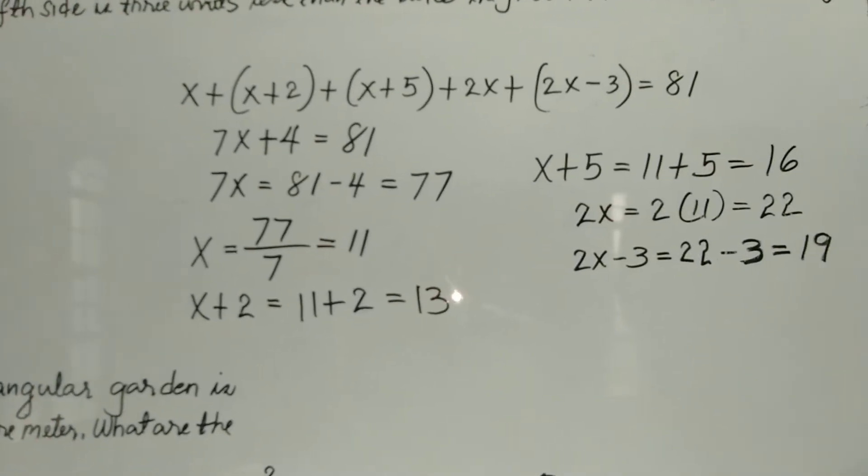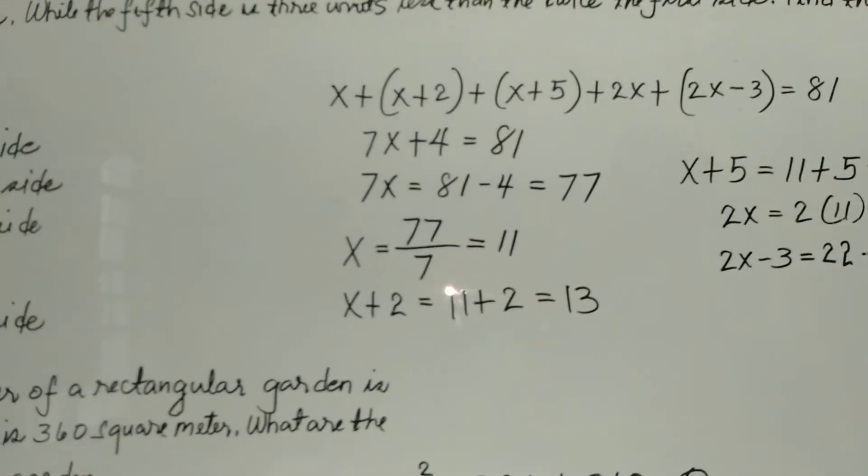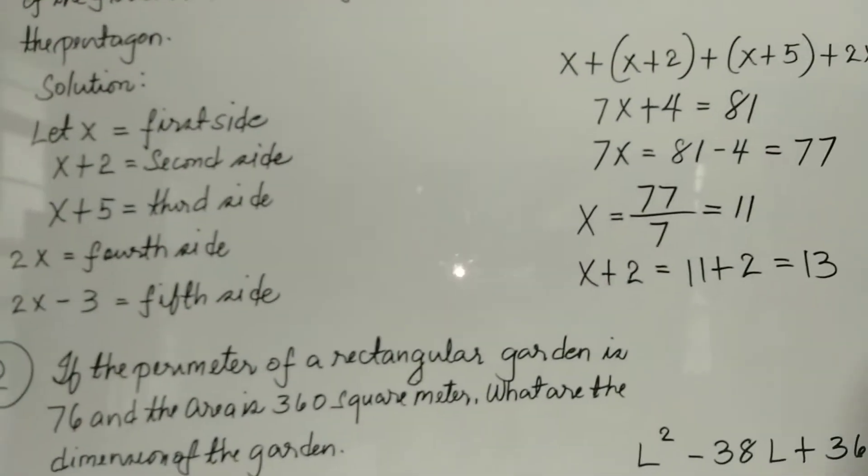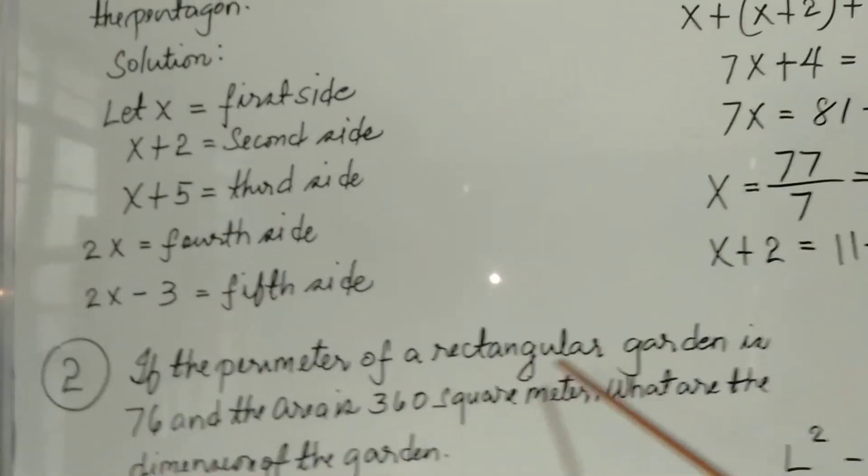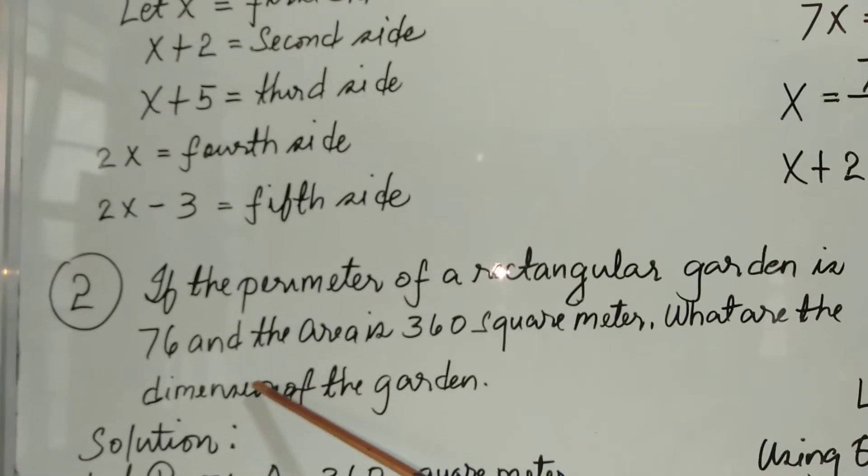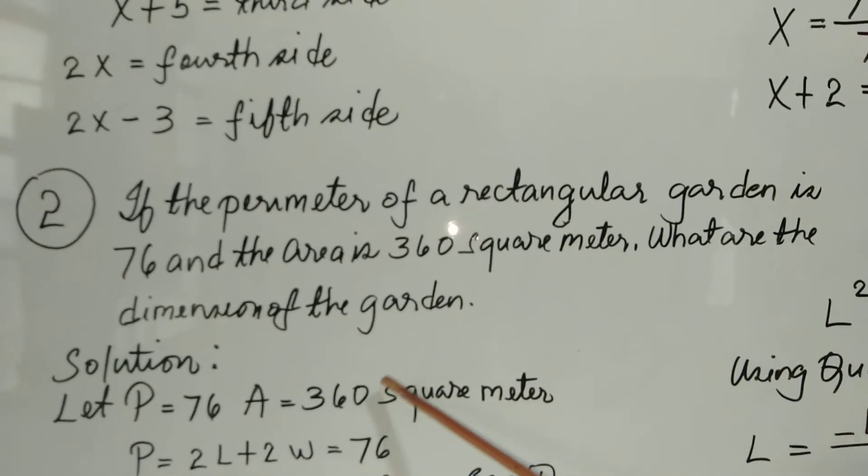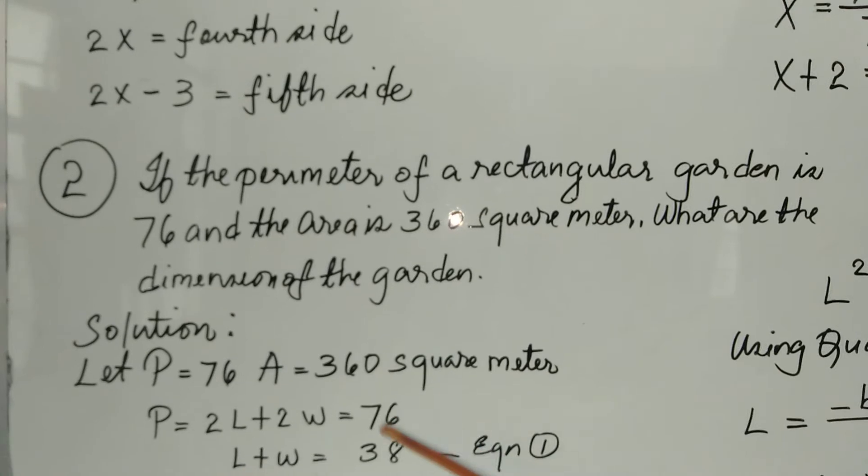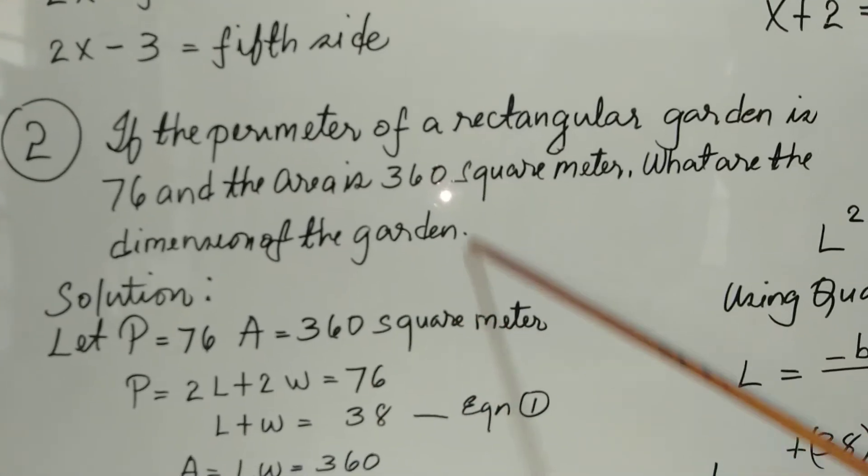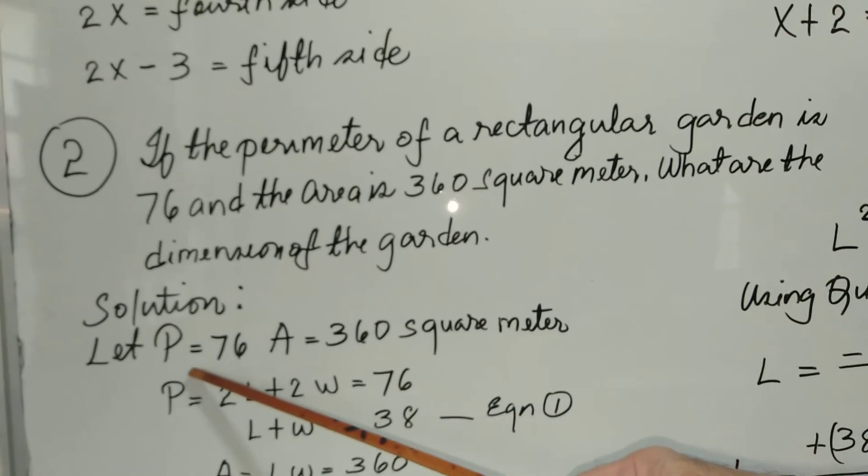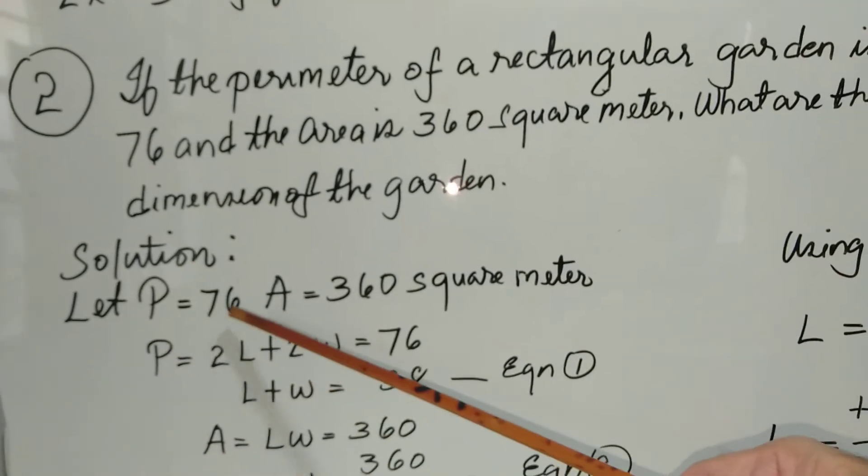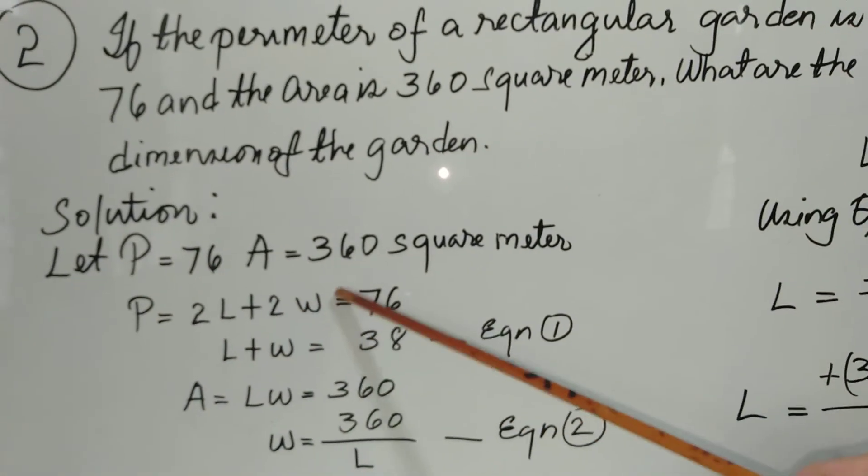We go to the second problem. If the perimeter of a rectangular garden is 76 and the area is 360 square meters, what are the dimensions of the garden? Again, we transform this into an algebraic statement, where P equals 76, the perimeter, and the area is 360 square meters.